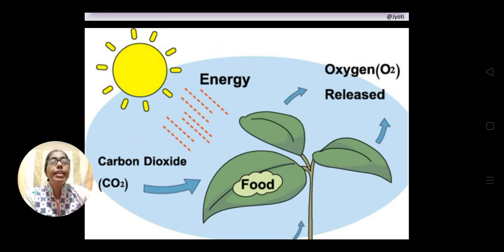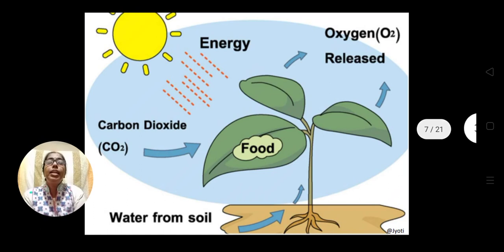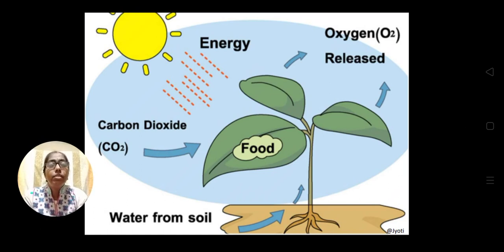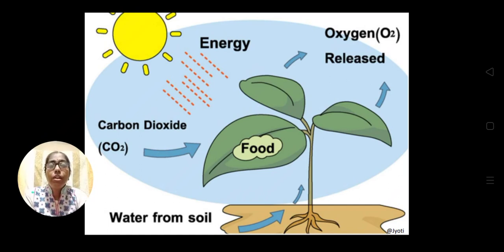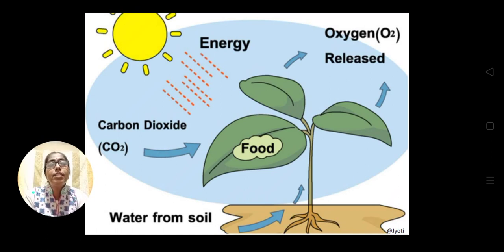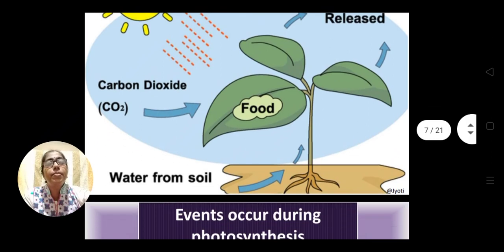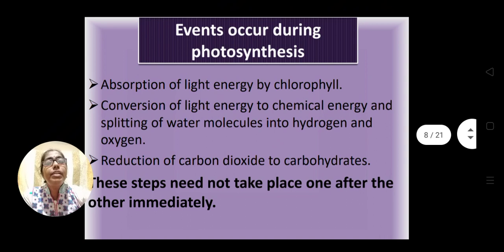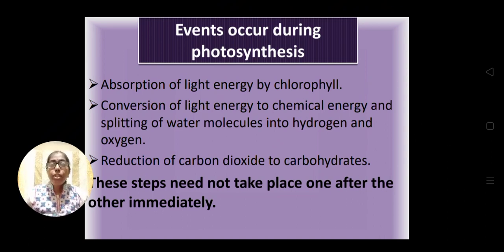Here you can see the process of photosynthesis. The green plant has green leaves with chlorophyll pigments. The plant receives carbon dioxide from the atmosphere, light energy from the sun, and water from the soil, and prepares food in the leaf. The food is then transported to different parts of the plant. Oxygen is released and the food is utilized by the plant for various purposes.